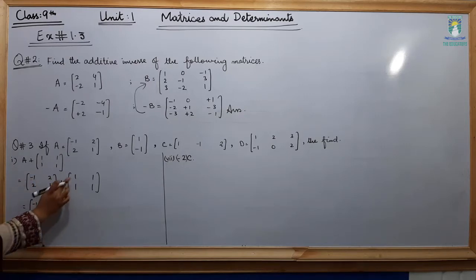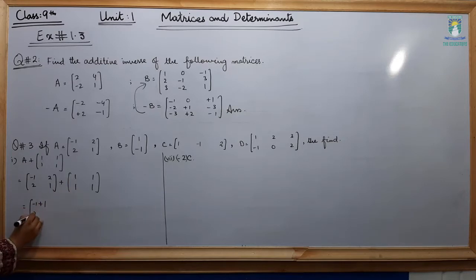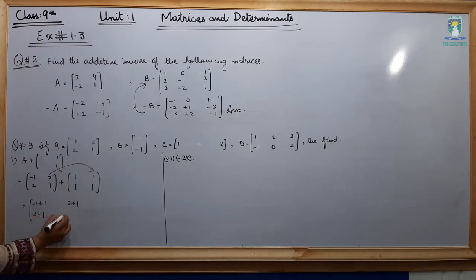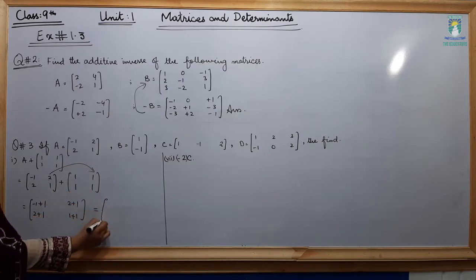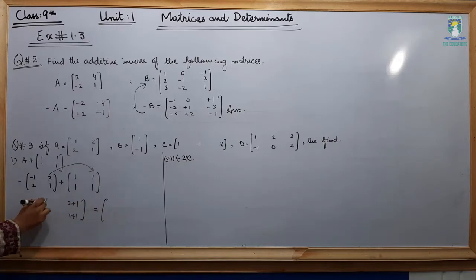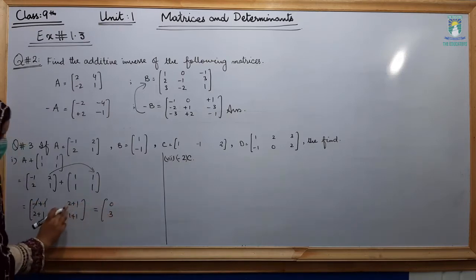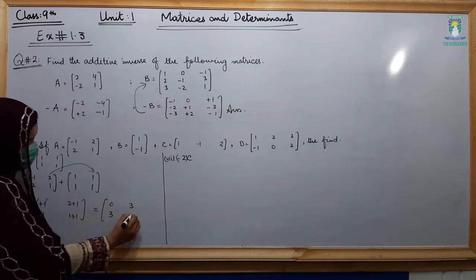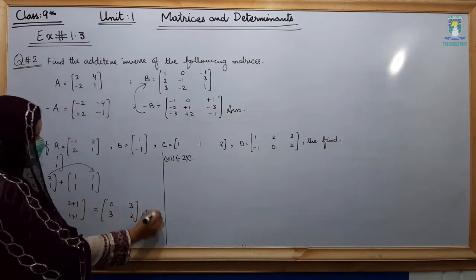The corresponding entry of minus 1 is plus 1. The corresponding entry of 2 is plus 1. The corresponding entry of the second 2 is plus 1. And the corresponding entry of 1 is 1. Now add these: minus 1 plus 1 cancels to 0; 2 plus 1 is 3; 2 plus 1 is 3; 1 plus 1 is 2. This is your answer.